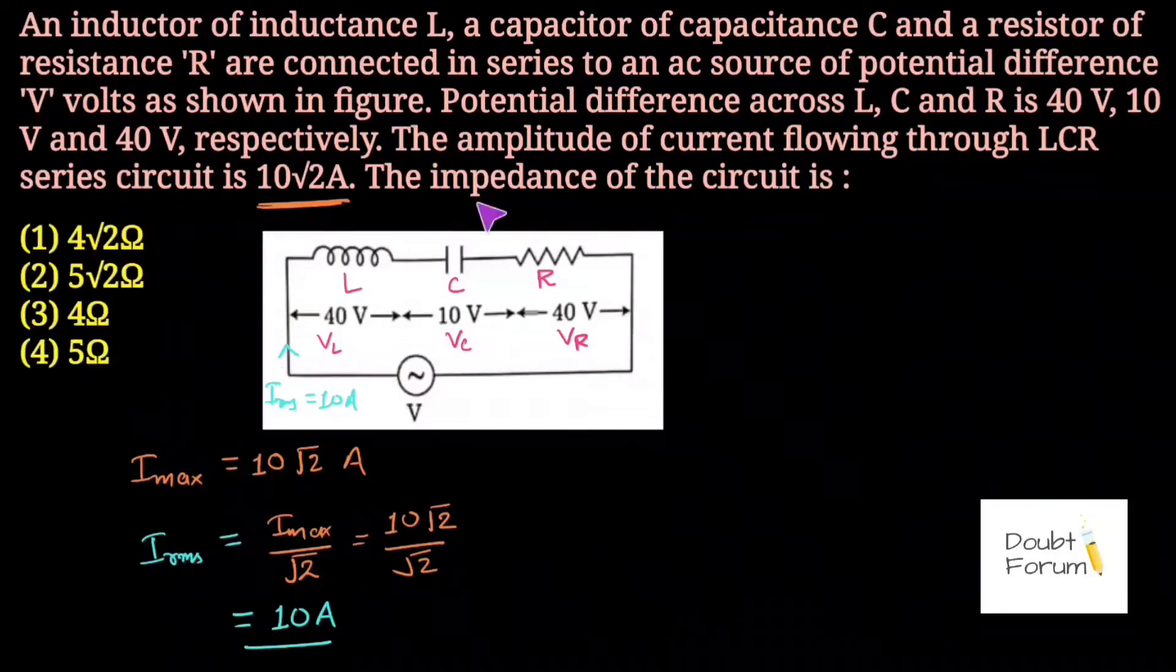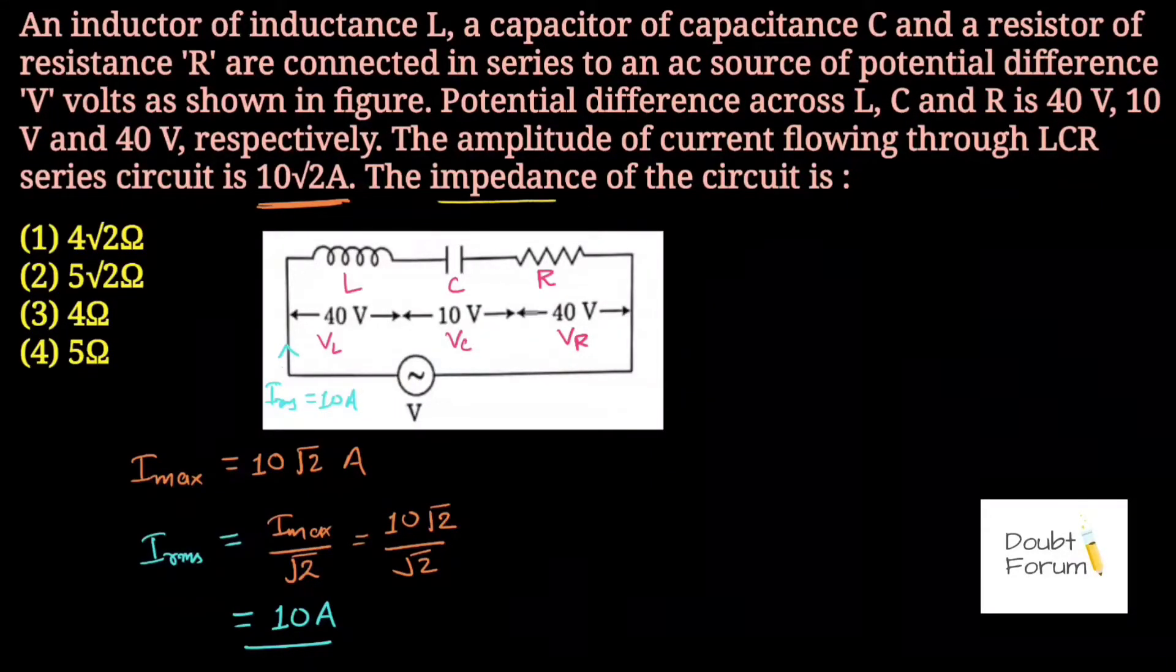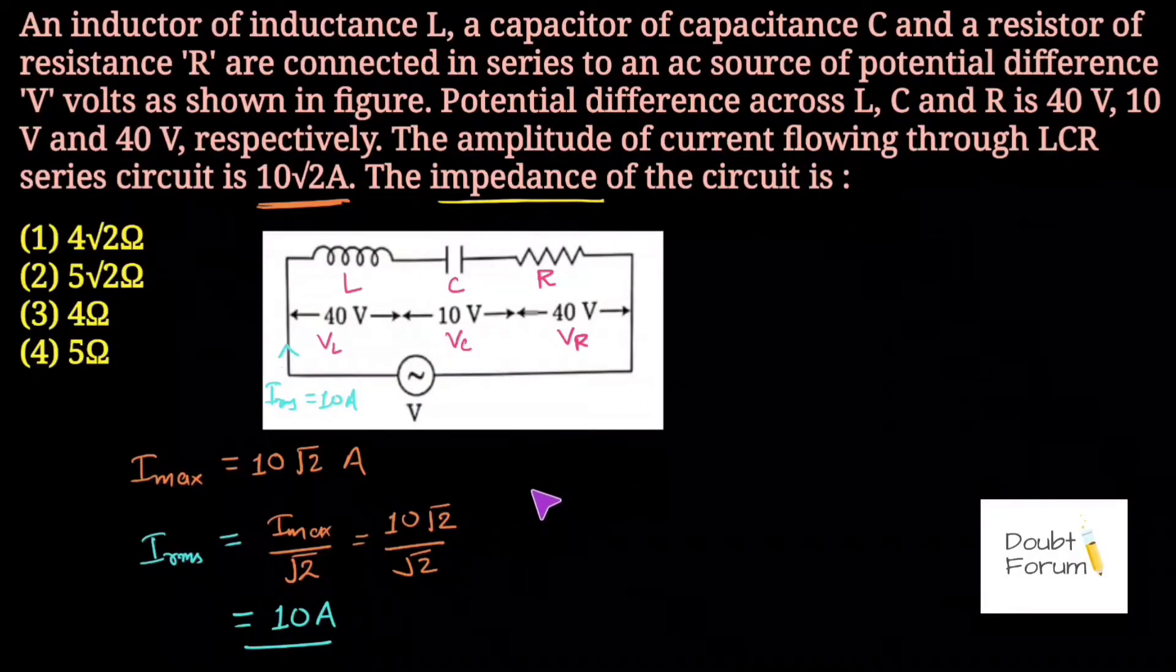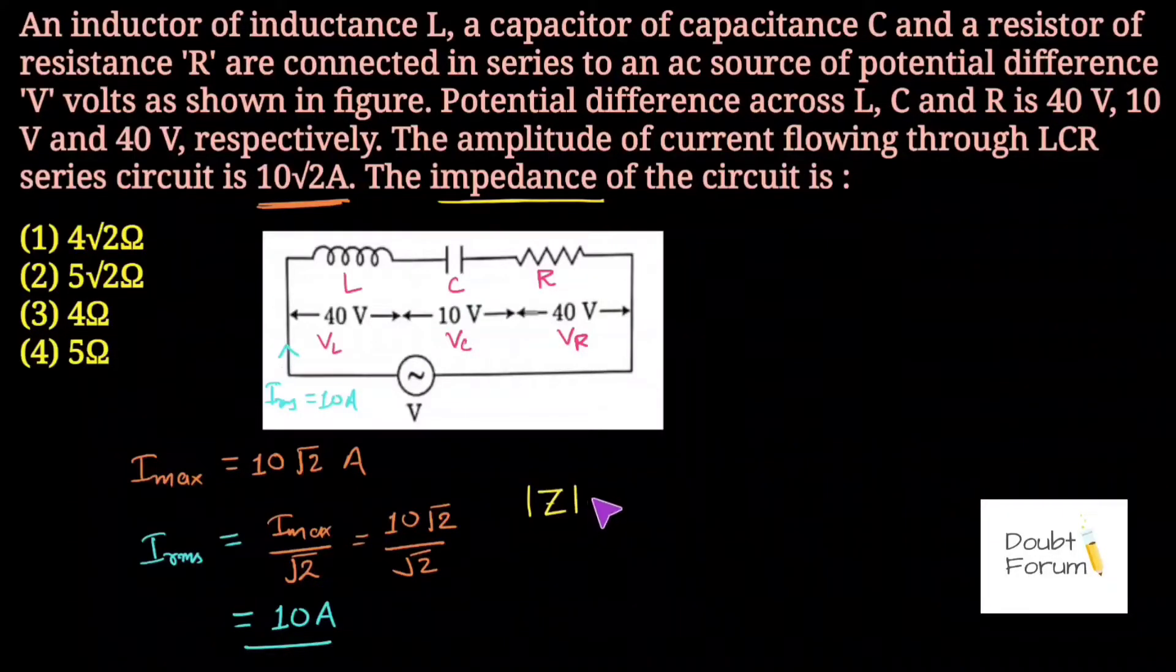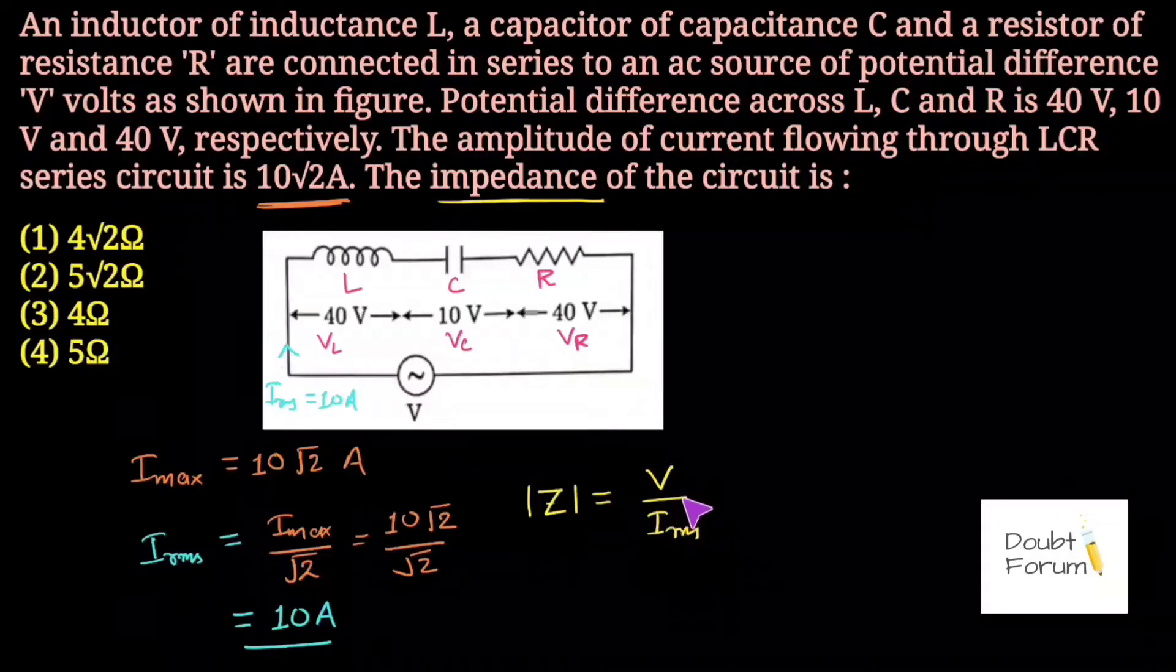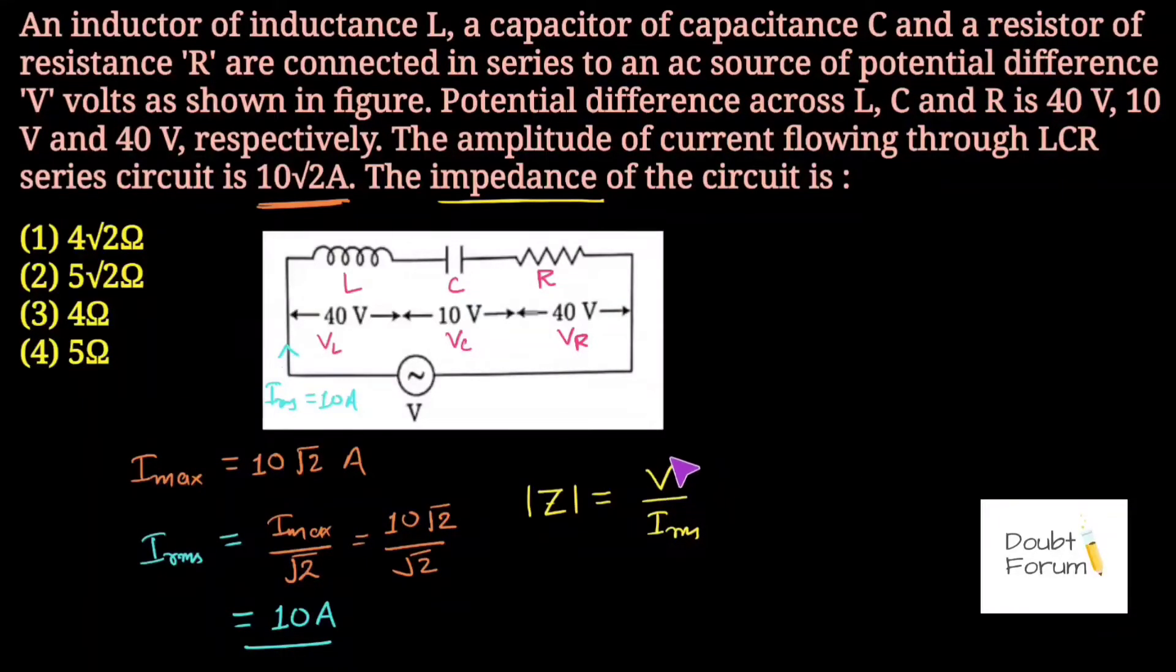In the question, we are asked to find the impedance of this circuit. The formula for impedance of any RLC circuit is Z equals V divided by IRMS. IRMS is known to us. We need to find the voltage V, which is the voltage across this circuit.